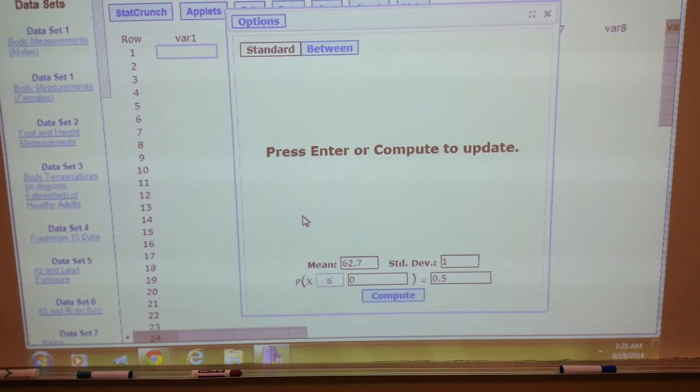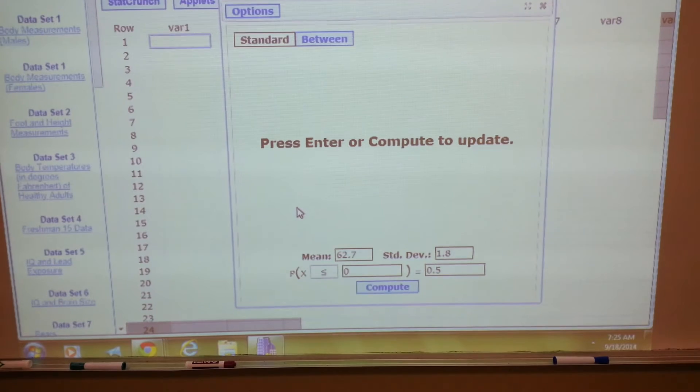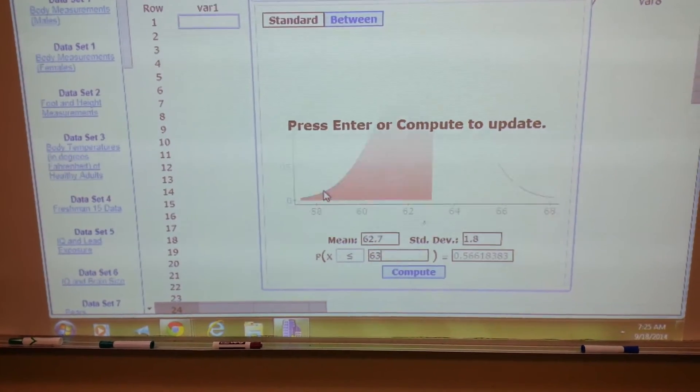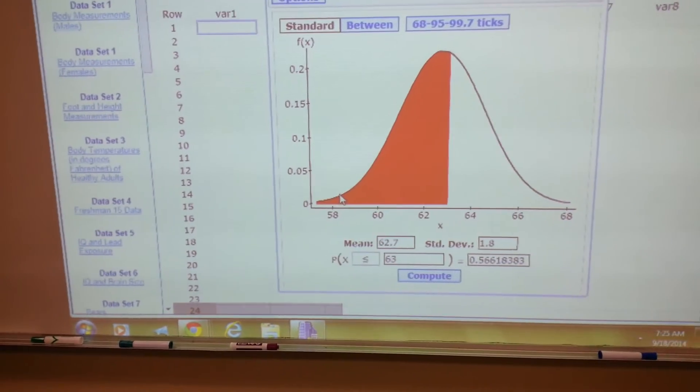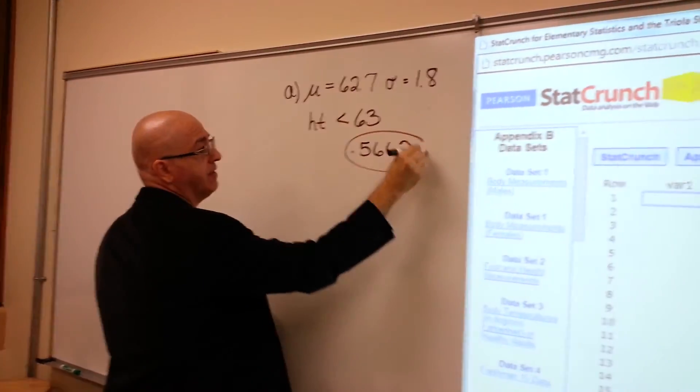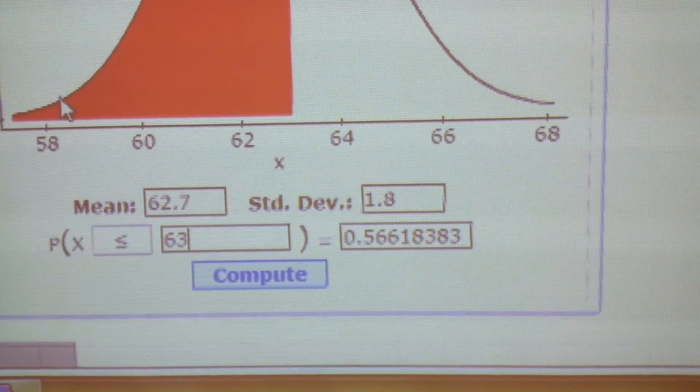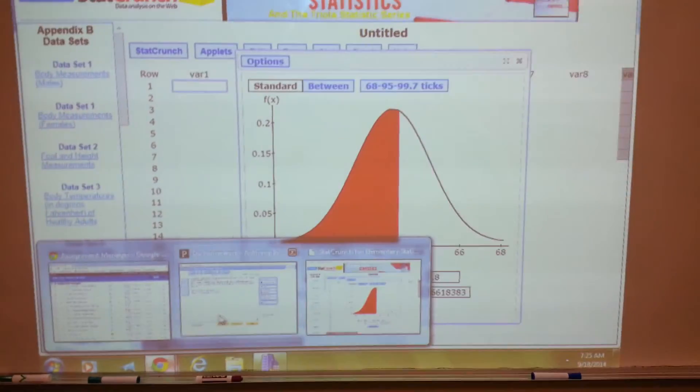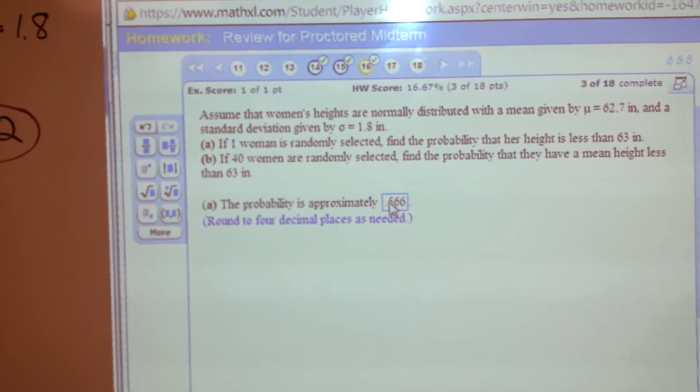62.7 is the mean. 1.8 standard deviation. Probability that height is less than 63: 0.5662. Am I reading that right? Round to 4 decimal places: 0.5662. Now I'll go back to the problem and type in 0.5662.